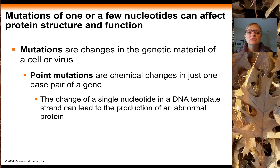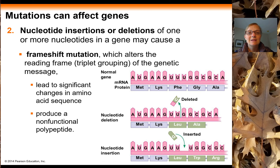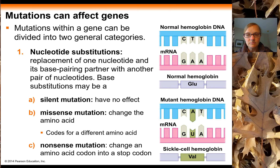There are two ways in which a point mutation can occur in a gene. The first is nucleotide substitution — what happens when you replace one nucleotide for a different nucleotide. The second kind of point mutation involves insertions or deletions: what if you don't substitute, but instead you add or delete one single nucleotide?